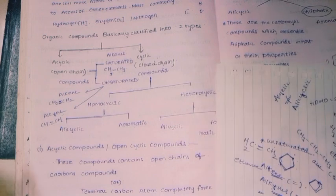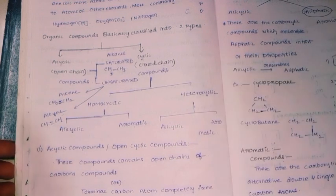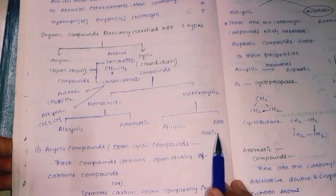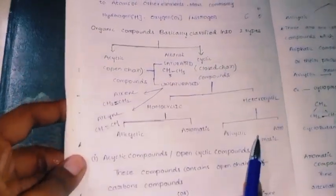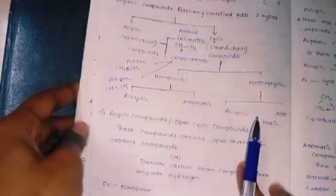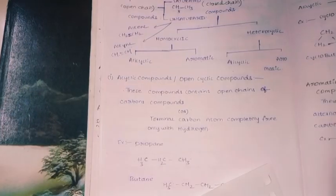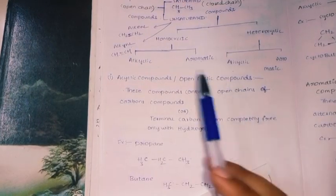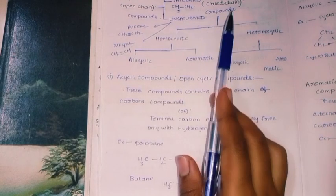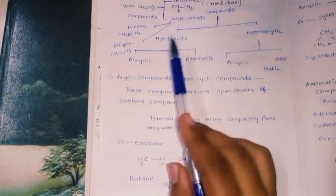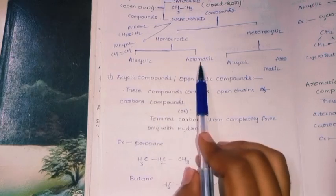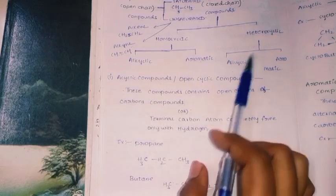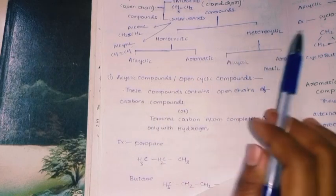When it comes to the full classification: closed chains are divided into homo and hetero. Homo has alicyclic and aromatic. Hetero also has alicyclic and aromatic subtypes.